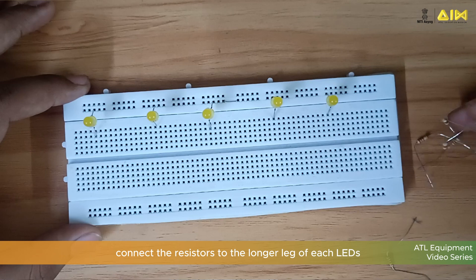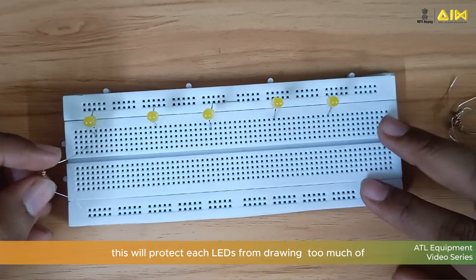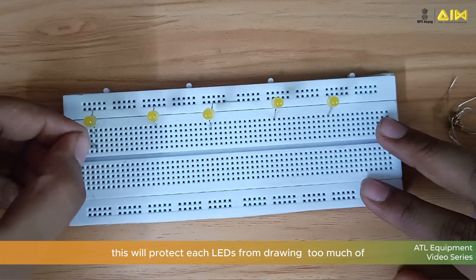Next, connect the resistor to the longer leg of each LED. This will protect each LED from drawing too much current.